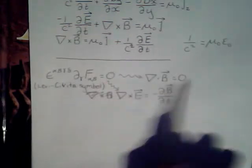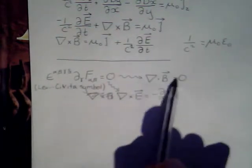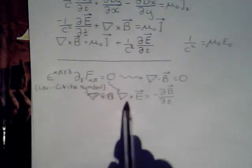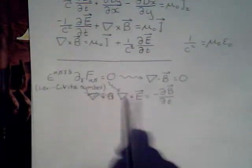The first equation here is divergence of B equals zero. And the second one, which is a vector equation, which gives us the other three equations, is the curl of E equals minus the partial of B with respect to T.